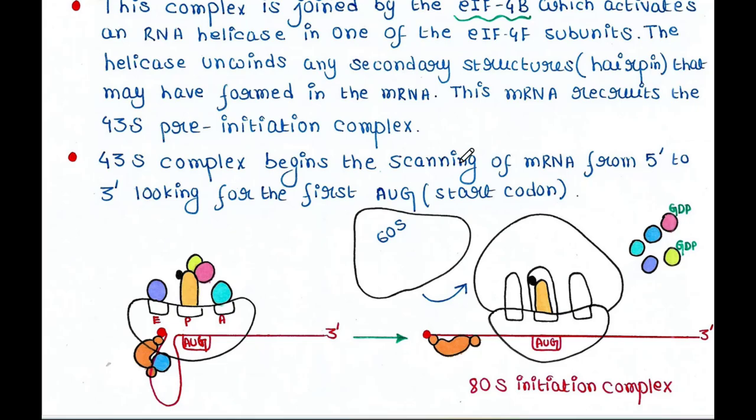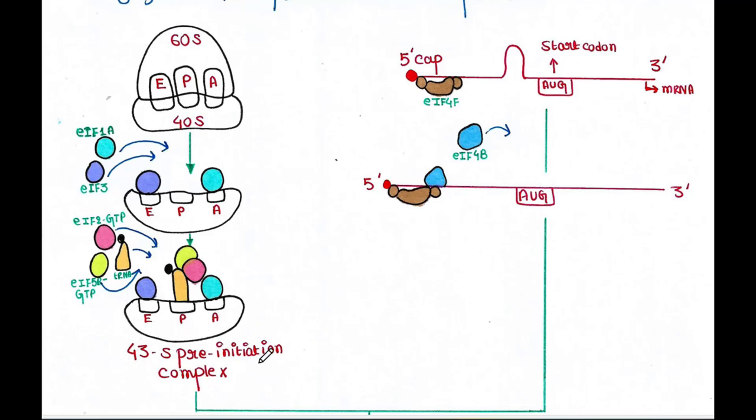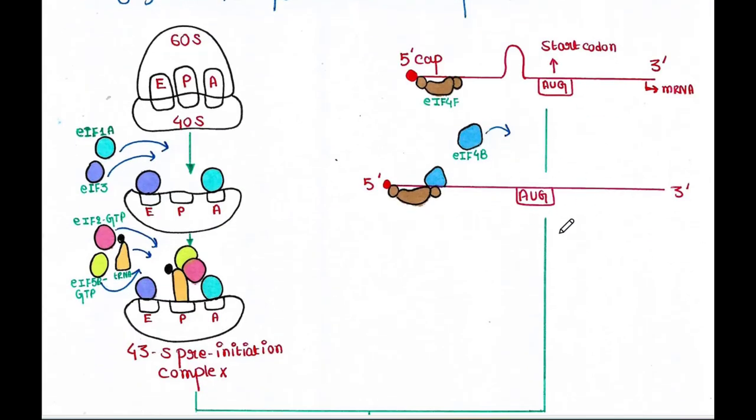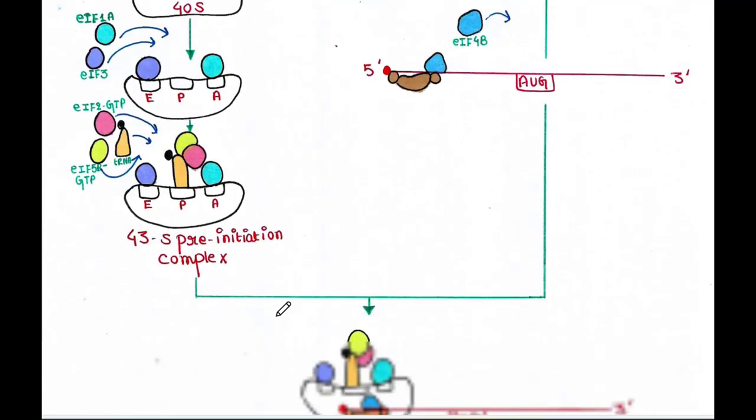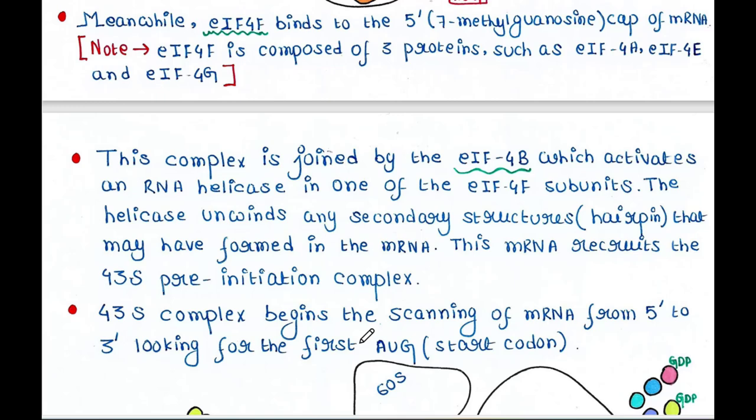And this mRNA now recruits the 43S pre-initiation complex. So here we have the 43S pre-initiation complex. Here we have the mRNA along with eIF4F and eIF4B. So this mRNA recruits this 43S pre-initiation complex. So here is the binding.